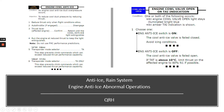For the cowl valve open — engine cowl valve open or TAI indication — condition: one or both of the following occurs: an engine cowl valve open light stays illuminated bright blue, or an amber TAI indication is shown. Choose one: if the engine anti-ice switch is on, the cowl anti-ice valve is failed closed — avoid icing conditions. If the engine anti-ice switch is off, the cowl anti-ice valve is failed open. If TAT is above 10 degrees Celsius, limit thrust on the affected engine to 80% N1 if possible.